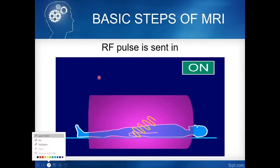The hydrogen proton is precessing. For example, if the precession is 42 MHz, then the RF pulse supplied must also be 42 MHz — they must match. If the precession of the hydrogen proton is 50 MHz, then the radio frequency supplied must also be 50 MHz for the patient to absorb it.